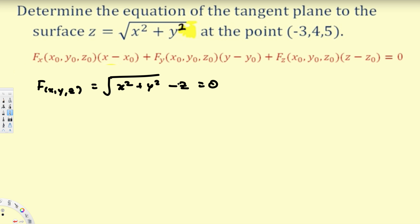Now after we rearrange this, what we have to do is find the derivative with respect to x, with respect to y, and with respect to z. So we are going to find the partial derivatives: partial derivative with respect to x, with respect to y, and with respect to z.